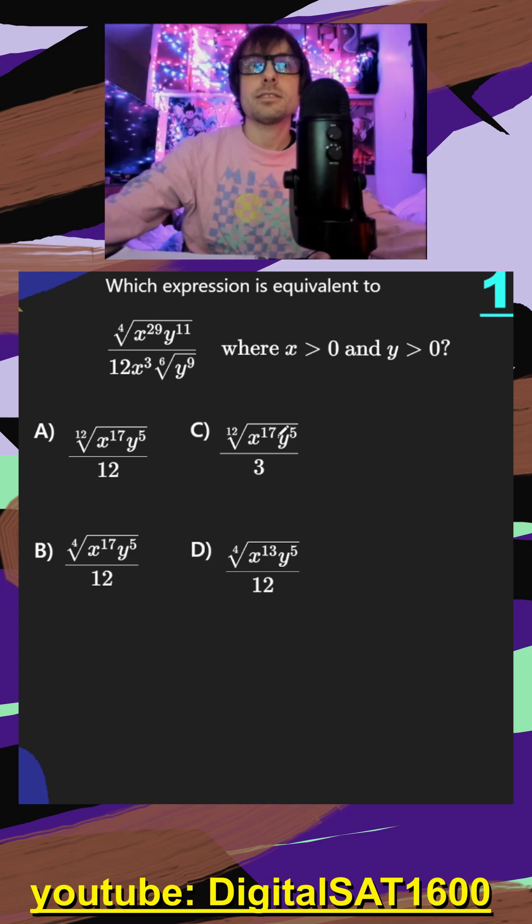So first by hand, just remember that these numbers in our radicals are just the denominators of our exponents. So I can rewrite that as x to the 29 divided by four. And then for y, I can write it as y to the 11 over four.